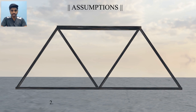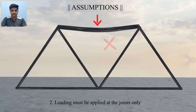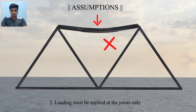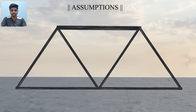The second assumption is that all loads must be applied at the joints. If a load is applied between joints, the member will behave as a beam. Therefore, for truss analysis it is essential that all loads are applied only at the joints.